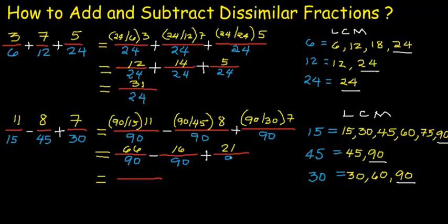We can add and subtract directly: 66 minus 16 plus 21 gives us 71. Our denominator is 90. We cannot simplify this anymore. Therefore, our final answer is 71 over 90.